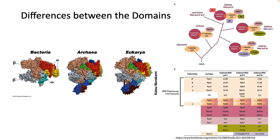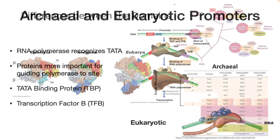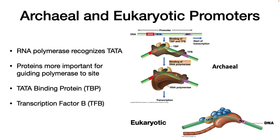Eukarya have specialized to the point of having three RNA polymerases. RNA polymerase 1 focuses on transcribing ribosomal RNA. RNA polymerase 3 focuses on transfer RNA and a few other non-coding RNAs. RNA polymerase 2 transcribes a wide variety of RNA, including messenger RNA. Another key difference between bacteria and archaea/eukarya is that bacterial RNA polymerase recognizes its promoter directly using a sigma factor. In contrast, auxiliary proteins not part of the RNA polymerase carry out this function in the other two domains. TATA binding protein binds to the TATA site, and transcription factor B recognizes BRE, or B recognition element, in the DNA. Once bound, these two proteins recruit RNA polymerase to the site.